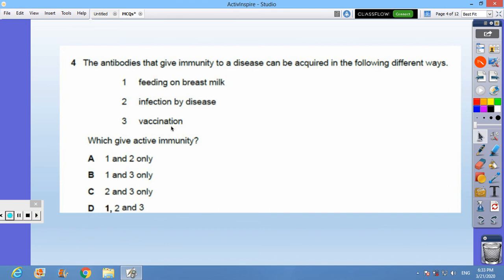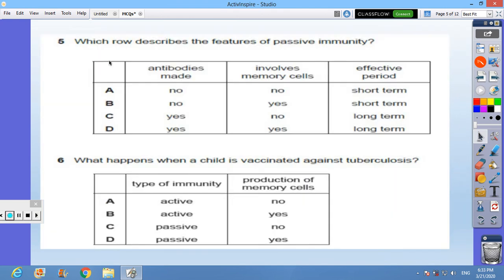Question 5: which describes the features of passive immunity? A: no making of antibody, no memory cells, and the effectiveness is for short term. Question 6: what happens when a child is vaccinated against tuberculosis? B: immunity